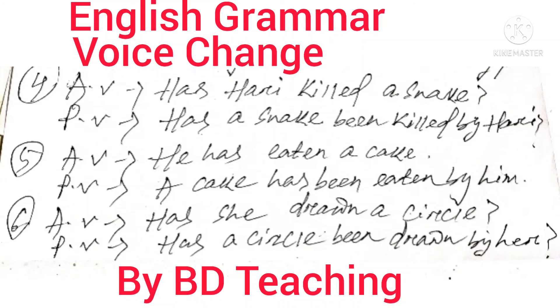Similarly, example six. Active voice: 'Has she done a circle?' The passive voice will be: 'Has a circle been done by her?'